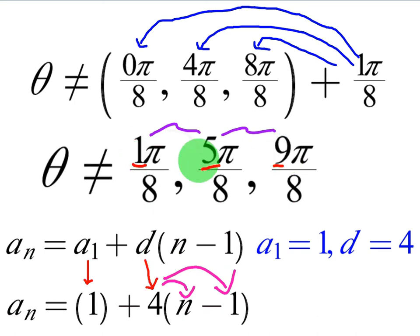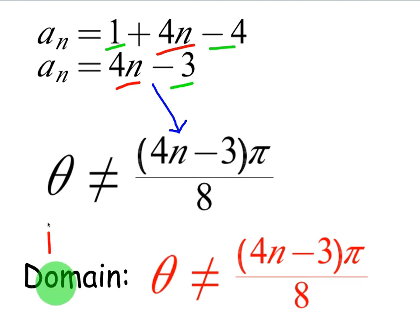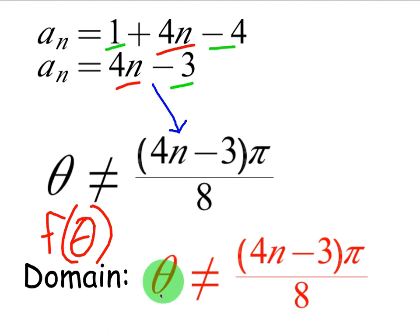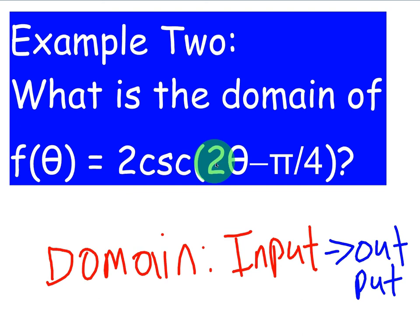All of these coefficients are replaced with 4n - 3, and π/8 stays. Hence, the final answer: θ cannot equal (4n - 3)π/8. Therefore, the domain of f(θ) is equal to any θ except θ ≠ (4n - 3)π/8. If you plug any integer in for n, you get a value you cannot plug into the original function.